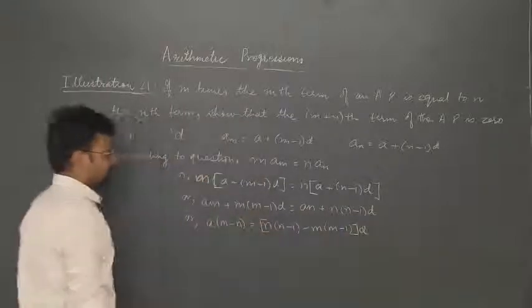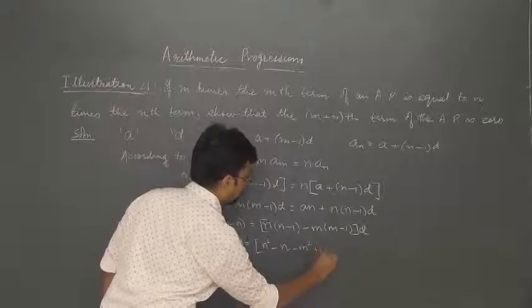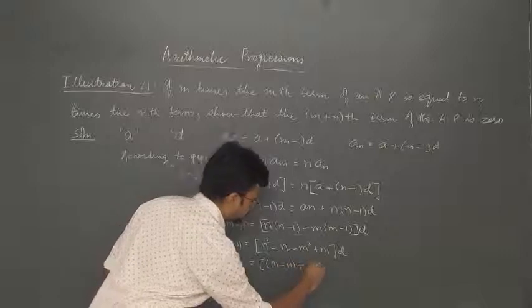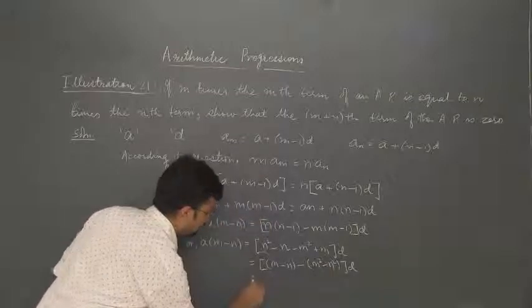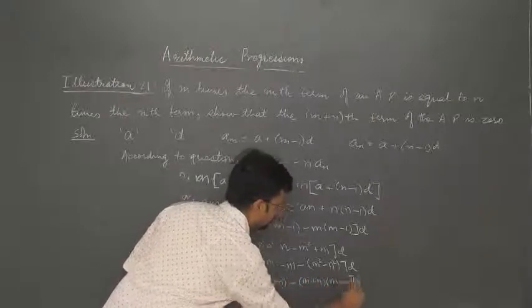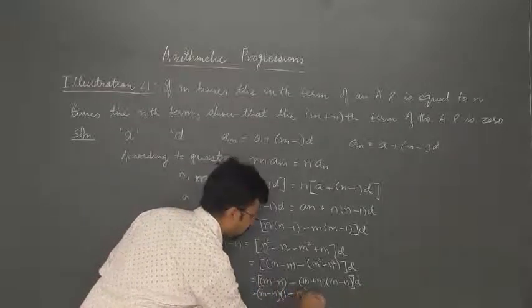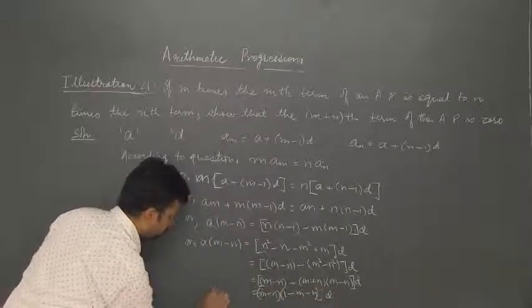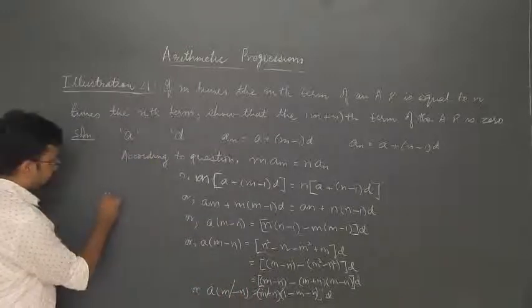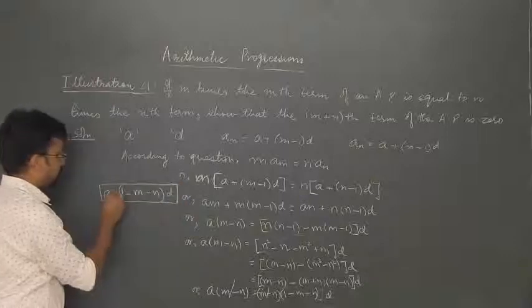We take a to one side and d terms to the other side. We get: (n squared minus n minus m squared plus m) into d equals (m minus n)a. Simplifying the d side: (m minus n) minus (m squared minus n squared) into d, which factors as (m minus n) times [1 minus (m plus n)] into d. We cancel out (m minus n) from both sides and obtain: a equals [1 minus (m plus n)] into d.